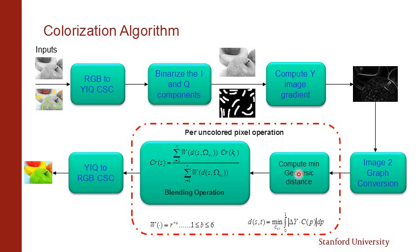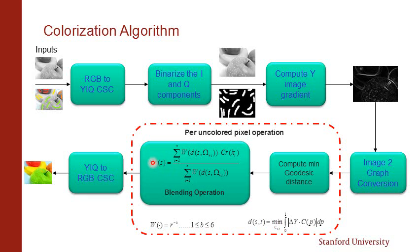The key operation in this algorithm is calculating the minimum geodesic distance for a given uncolored pixel. The minimum geodesic distance is calculated for all the chrominance values present as color scribbles. For each chrominance value, we find the minimum geodesic distance, which is then fed to the blending operation. The blending operation derives a weight from the minimum geodesic distance and uses that weight to blend the chrominance values and arrive at the chrominance value of the uncolored pixel.